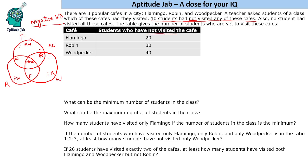Now, what are we given? Ten students had not visited any of these cafes, so at the center we will have 10. We are also given the number of students who have not visited these cafes: 20 for Flamingo, 30 for Robin, and 40 for Woodpecker.